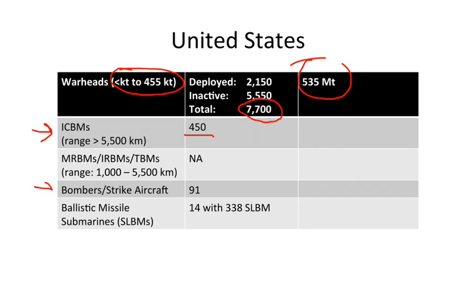They have 91 bombers, although not all of those are designed for the nuclear strike role. And then a fleet of 14 ballistic missile submarines — the Ohio-class submarines — with 338 submarine-launched ballistic missiles.